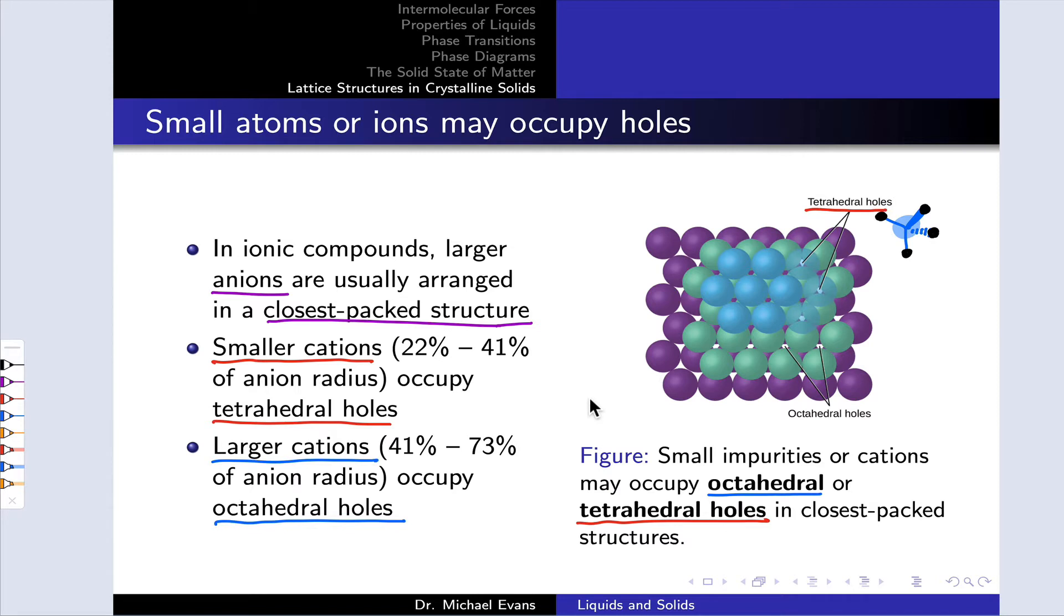Larger cations occupy what are called octahedral holes. The key with an octahedral hole is that it forms an octahedron-like shape around the hole. An octahedral hole has a triangle of atoms above the hole and a triangle of atoms below the hole pointing in the opposite direction.